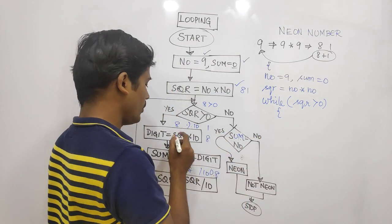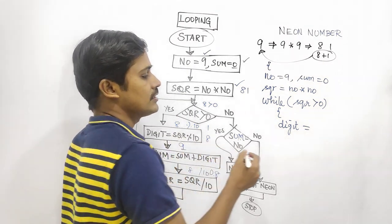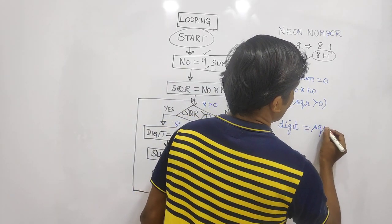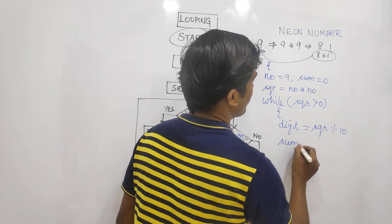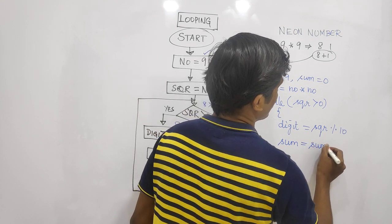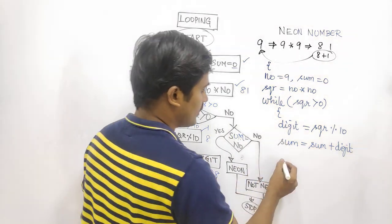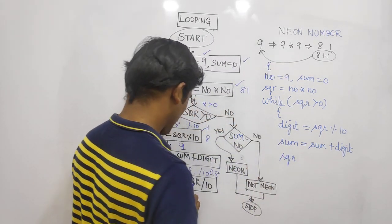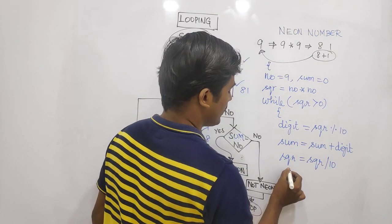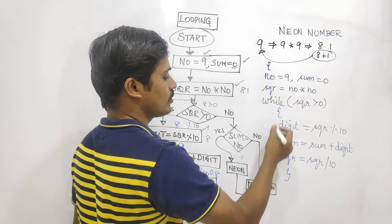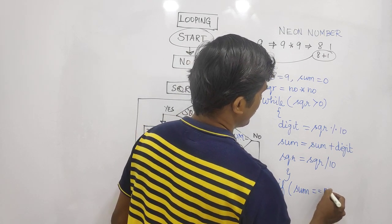Inside the loop: digit equals square modulus 10. Then sum equals sum plus digit. After that, square equals square divided by 10. We repeat while square is greater than 0. This extracts each digit and accumulates the sum.